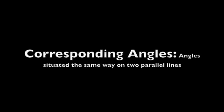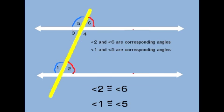Corresponding angles are angles that are situated in the same way with those two parallel lines. We have our two white parallel lines and the transversal. If we look at angle 2 and angle 6, notice it's on top of the parallel line connected to the transversal — these are corresponding angles. Angle 1 and angle 5 are also corresponding angles. Because of this, the pairs are congruent: angle 2 is congruent to angle 6, and angle 1 is congruent to angle 5.